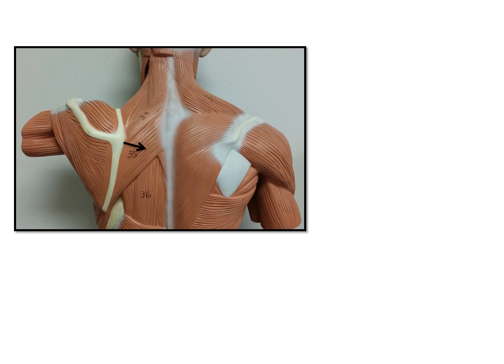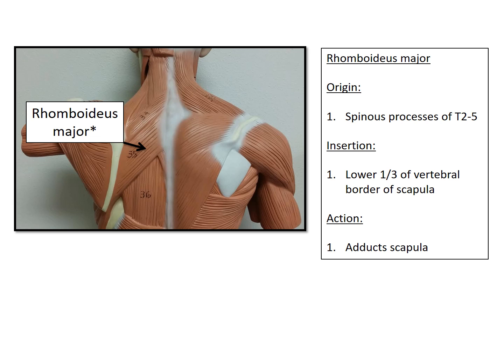Now we're looking at the posterior trunk. The first muscle indicated here is the rhomboideus major. The origin is the spinous processes of thoracic vertebrae 2 through 5. The insertion is the lower one-third vertebral border of the scapula, and the action is to adduct the scapula, meaning to bring the scapula close to the midline.